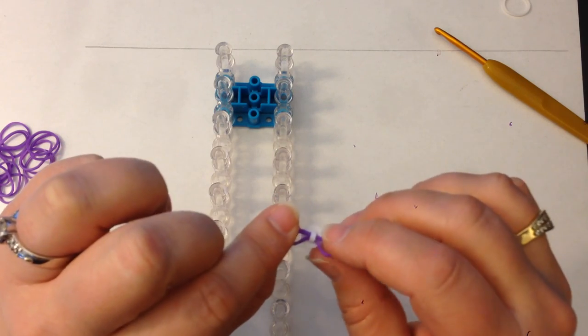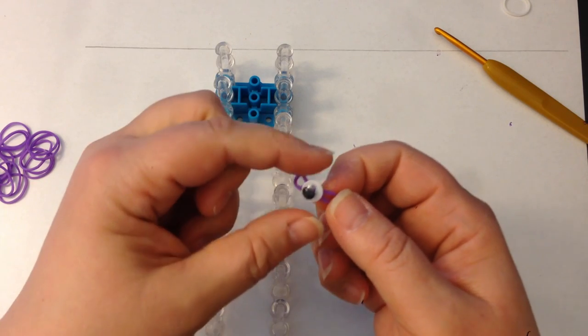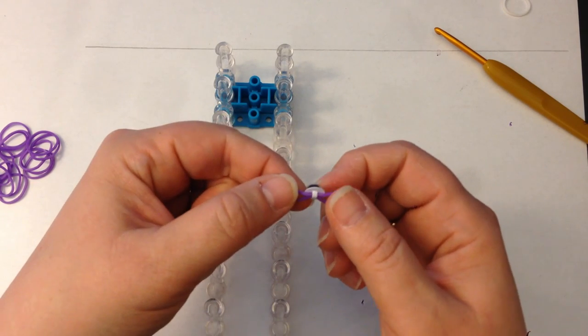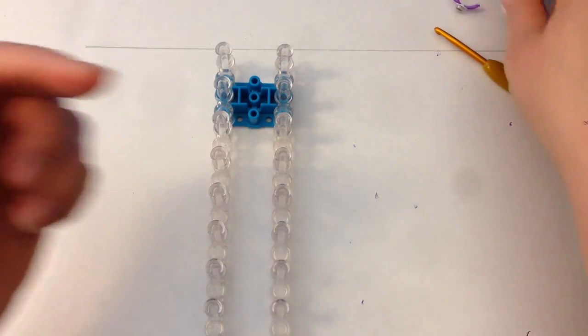Now I have a sew on googly eye and I've actually threaded that with a metal threader on here. You can use a bead, you can use an adhesive googly eye and stick it onto a button, whatever you choose.